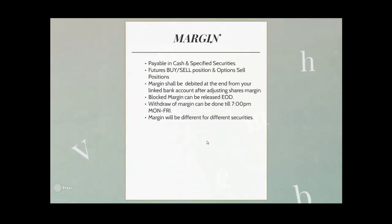Now let me come to what is a margin. Margin is something that the exchange takes from you when you trade into derivatives, or a broker takes from you in order to buy or sell any positions. You can pay margin in cash or through specified securities. Margin is charged in the derivative section — in the case of futures, buy or sell position, they charge a margin. If you buy an option, they don't charge you a margin, but if you sell an option, you have to pay margin.